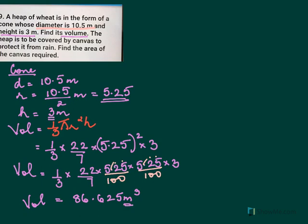The question is: the heap is to be covered by a canvas and protected from the rain. Find the area of the canvas required. So if suppose this is the heap, this is your heap of the cone. And you have to cover it. So you have to find this area, which is the CSA.